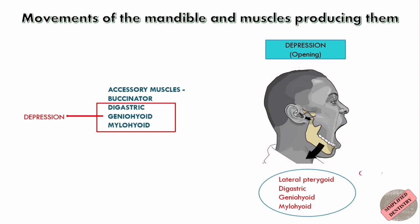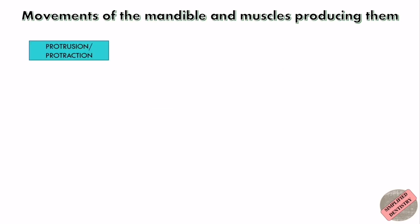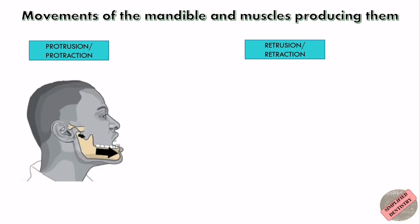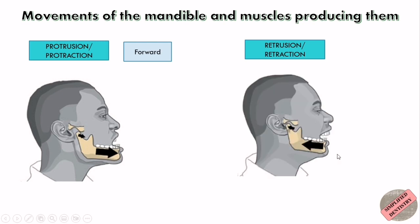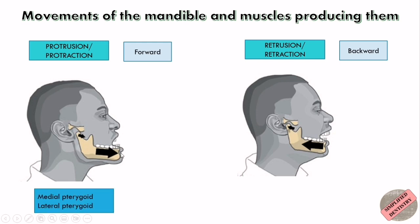Gravity also plays a major role in the depression of the mandible. Now let's see about protrusion and retrusion. Protrusion or protraction is the forward movement of the mandible, whereas retrusion or retraction is the backward movement. Protraction is caused by the medial pterygoid and lateral pterygoid — simply remember that P stands for protrusion and P stands for pterygoid muscles.